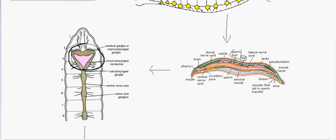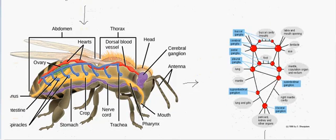Moving forward, in phylum Arthropoda the head has developed completely, and we can clearly distinguish the head structure. This has occurred due to tagmatization — the fusion of metameres — as discussed in the previous video. The organism has a cerebral ganglion analogous to a brain, with the nervous tissue continuing from it.